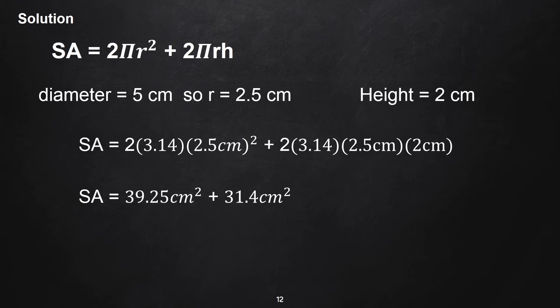For the 2πrh, that is 31.4 centimeters squared. The surface area is 70.65 centimeters squared. But that is not the final answer since the required answer is in terms of inches squared.